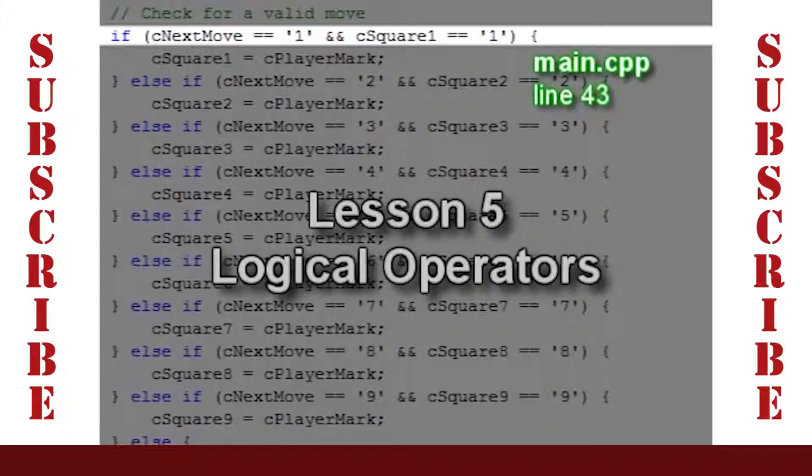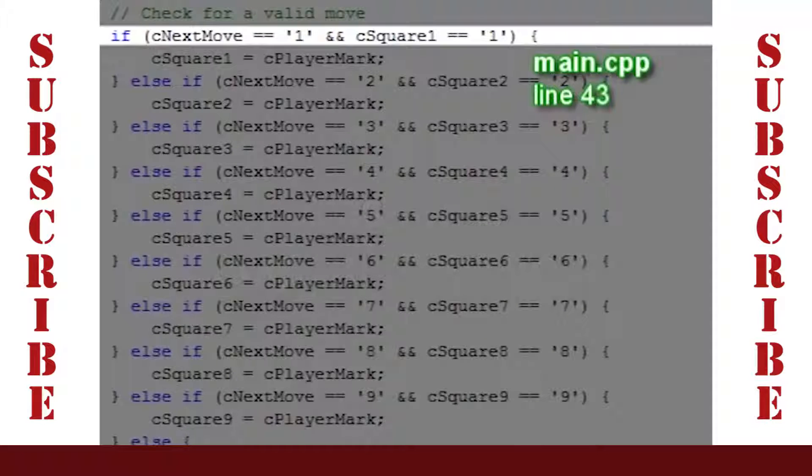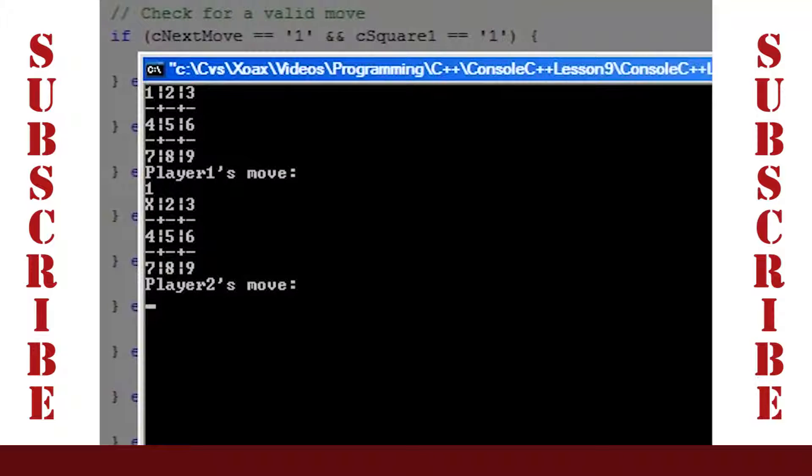The first check verifies that the input is a digit 1 through 9, and the second check ensures that the square is still a number. The second check makes sure that no one has marked that square already. Once a player moves, the square is changed like this. If a player makes an invalid move, he is prompted to try again, like this.